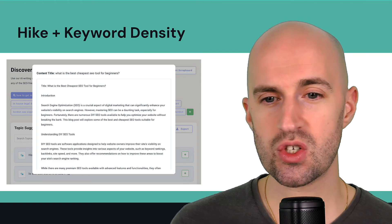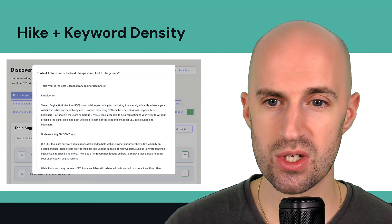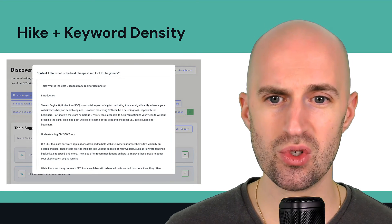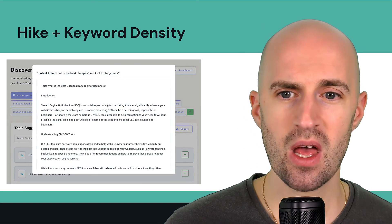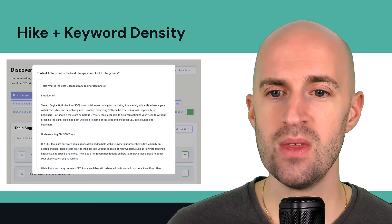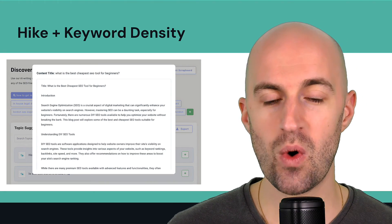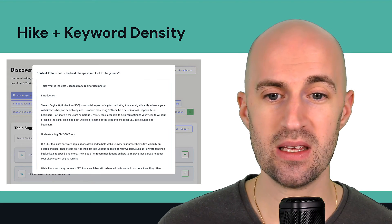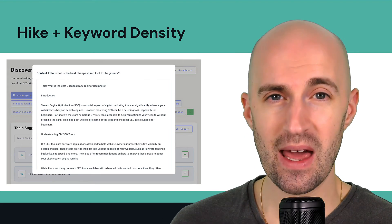Here's a quick screenshot of how the content wizard looks. The focus topic shown is 'what is the best cheapest SEO tool for beginners.' It generates the content quite quickly, gives you an outline, and you can expand upon that if you want.